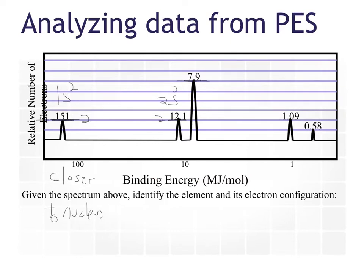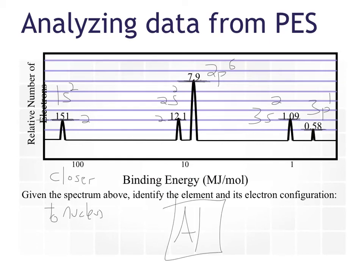This height here is actually three times bigger, which is good, because we're at our 2P shell and it has six electrons in it. Then back here at much lower energy, this is 3S2. And my last one — notice it's half the height; there's only one electron there, because it's half the height of the one that has 2 in it. When we're at the 3P subshell, because that fills up next, this is 3P1. So we can just look at our periodic table and say, nice to see you, aluminum.